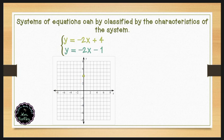We can plot our y-intercept at the point (0, 4), which will be on the y-axis, and use our slope of negative 2 to continue making this line. We will go down 2 and to the right 1 and continue making points so we have an accurate graph of this equation.